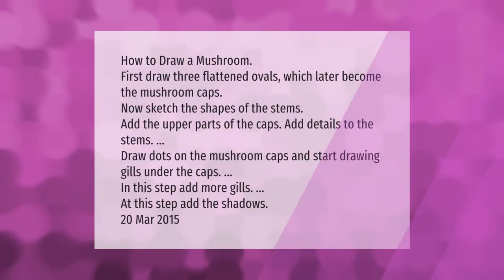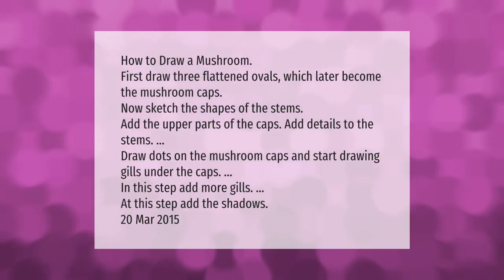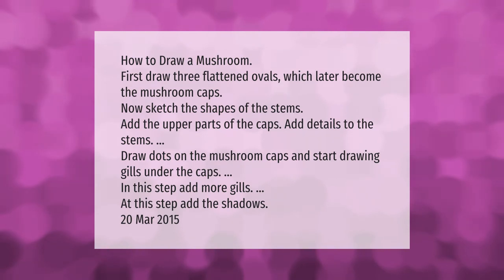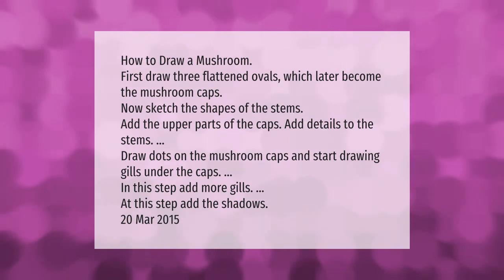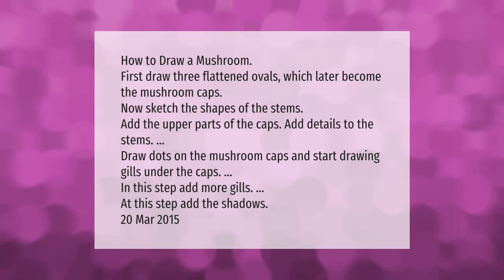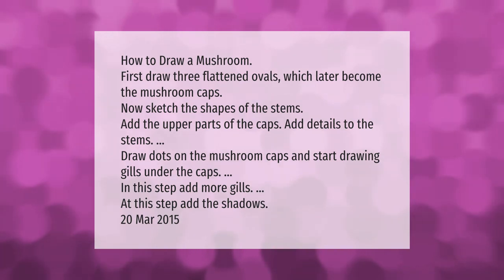How to draw a mushroom: First, draw three flattened ovals which later become the mushroom caps. Now sketch the shapes of the stems, then add the upper parts of the caps. Add details to the stems, draw dots on the mushroom caps, and start drawing gills under the caps. In the next step, add more gills.